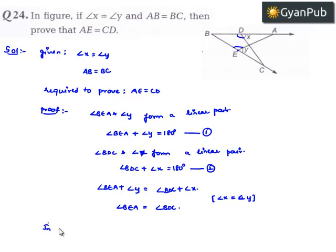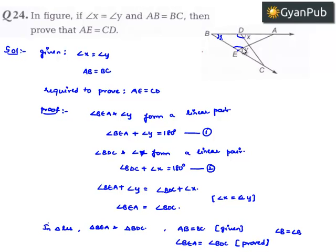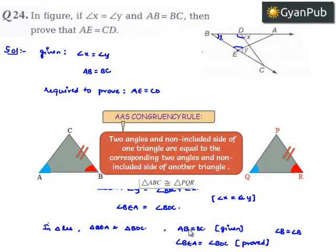Let us consider two triangles — triangle BEA and triangle BDC. In both triangles, it is given that AB is equal to BC, and we derived that angle BEA is equal to angle BDC. Also, angle B is a common angle for both triangles. Therefore, two corresponding angles and a side are equal in both triangles.